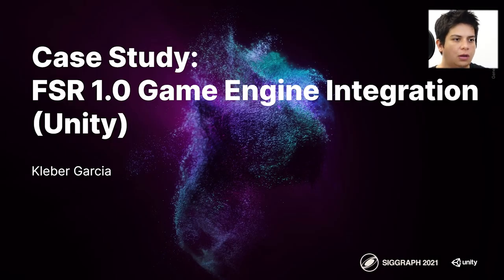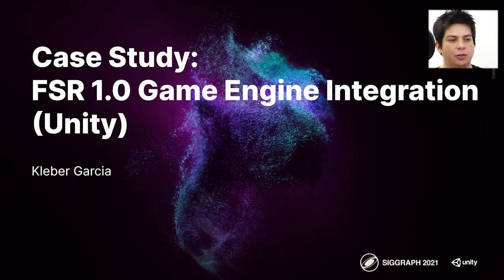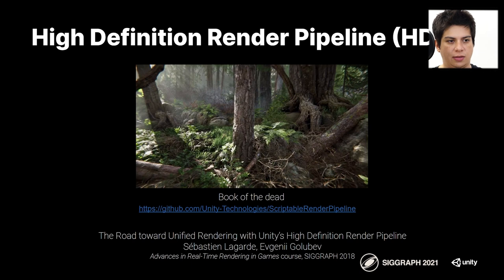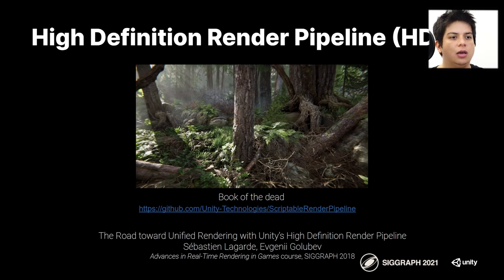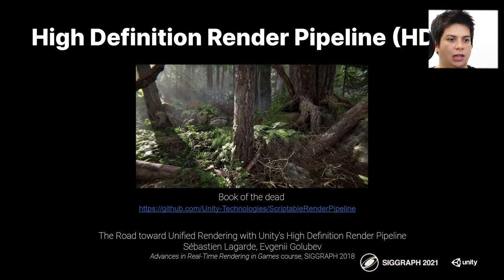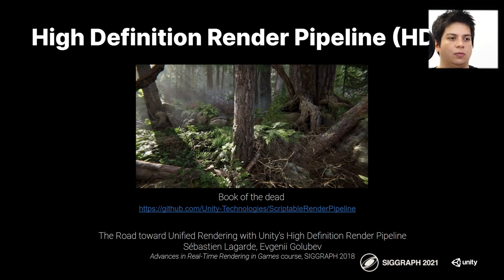For engine integration, I'll be speaking about the details and interesting choices we made for Unity. The first step is to introduce HDRP, which is where we integrated FSR. HDRP stands for High Definition Rendering Pipeline — essentially our AAA pipeline at Unity. This pipeline has a full post-process setup, physically-based rendering, many advanced GPU algorithms, ray tracing, and many advanced features.